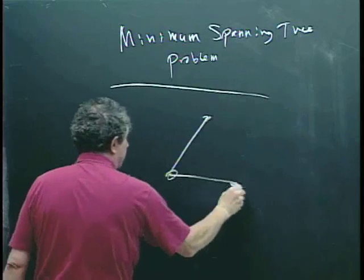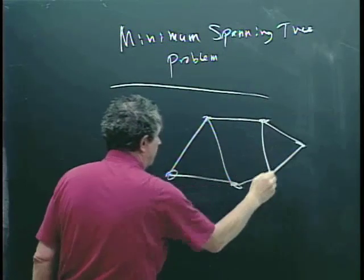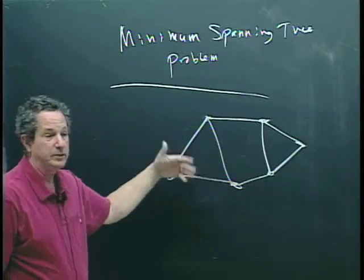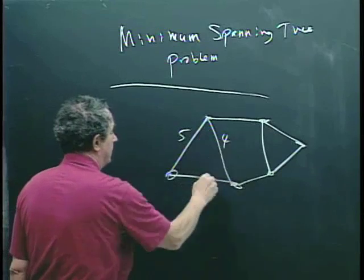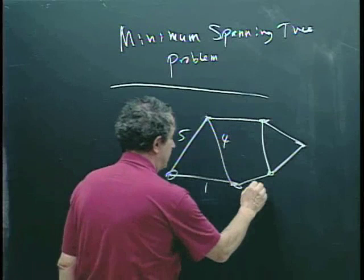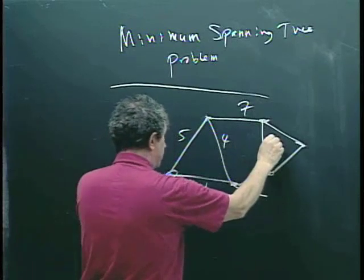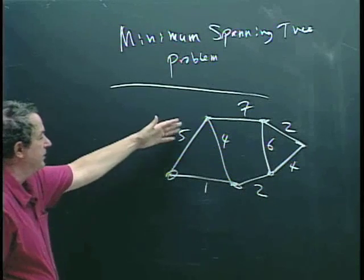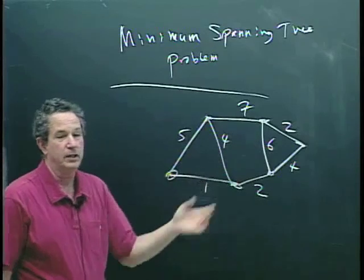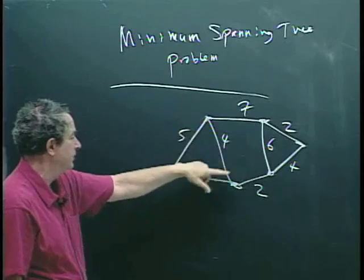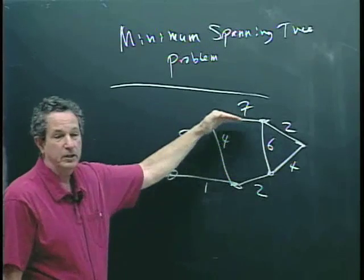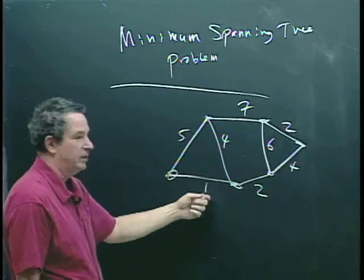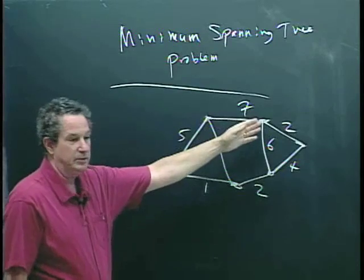Let me show you graphically an example of that problem. You have a graph, and it's undirected — there are no directions on the edges. Every edge has a weight, or a distance, or a cost. There's some number associated with each edge. You can think of this as a system of potential roads. The nodes are cities, and the edges drawn here are potential roads that might be built. If you build this road, it costs you one; this road costs five; this road costs seven, et cetera.